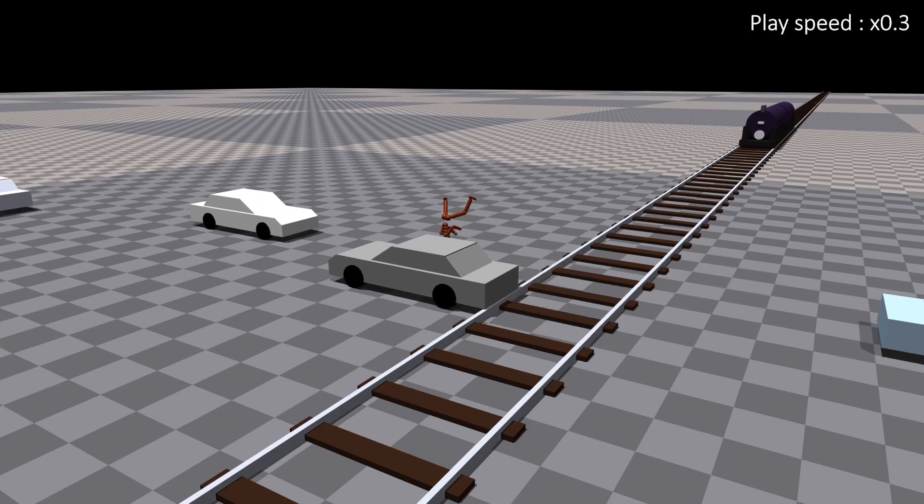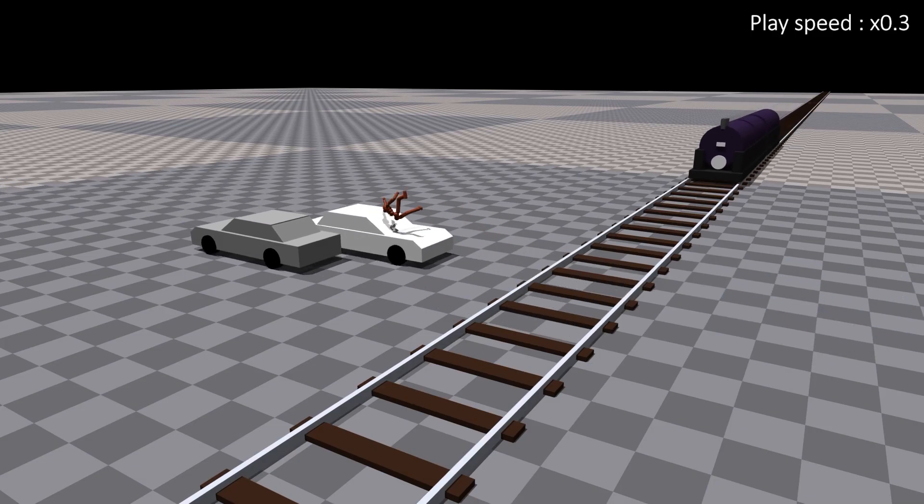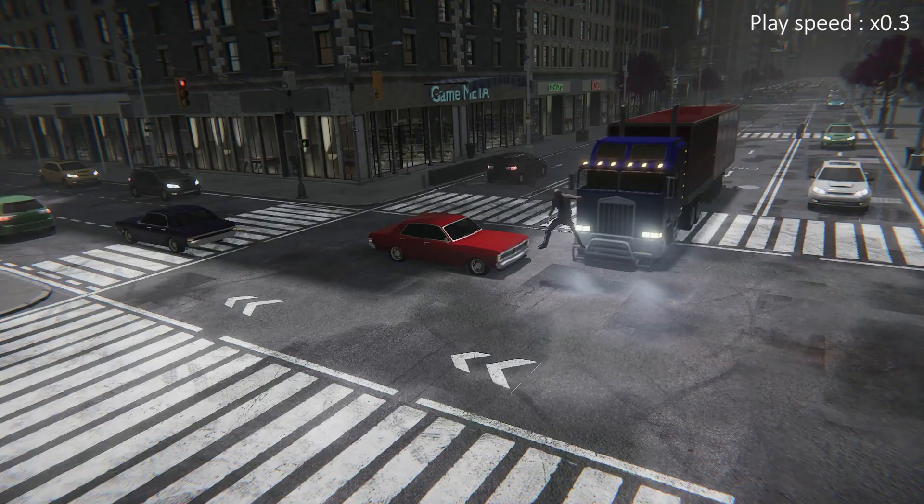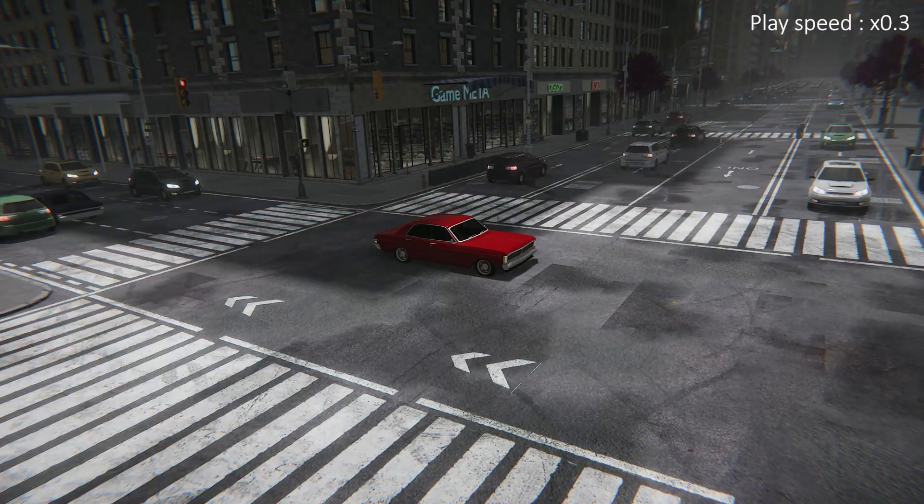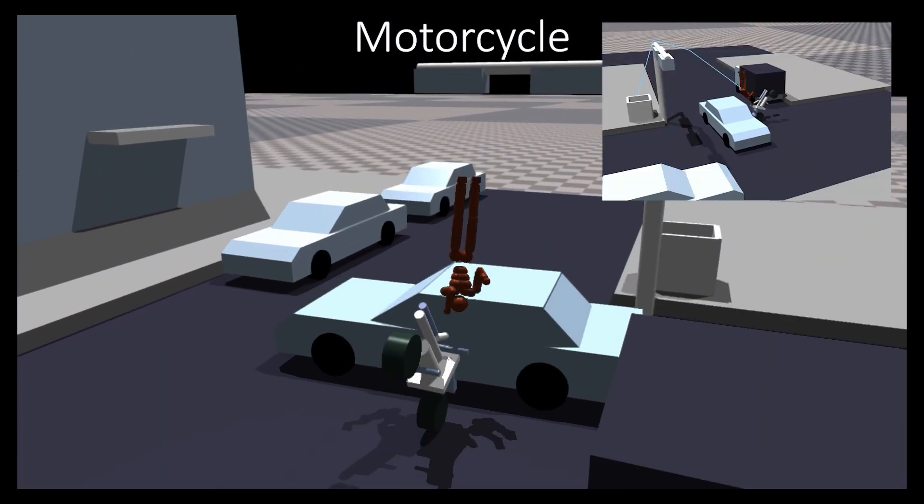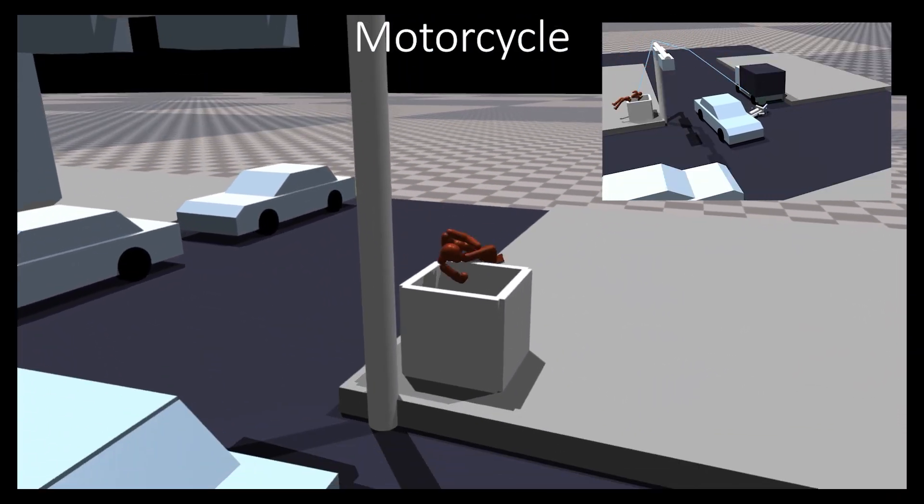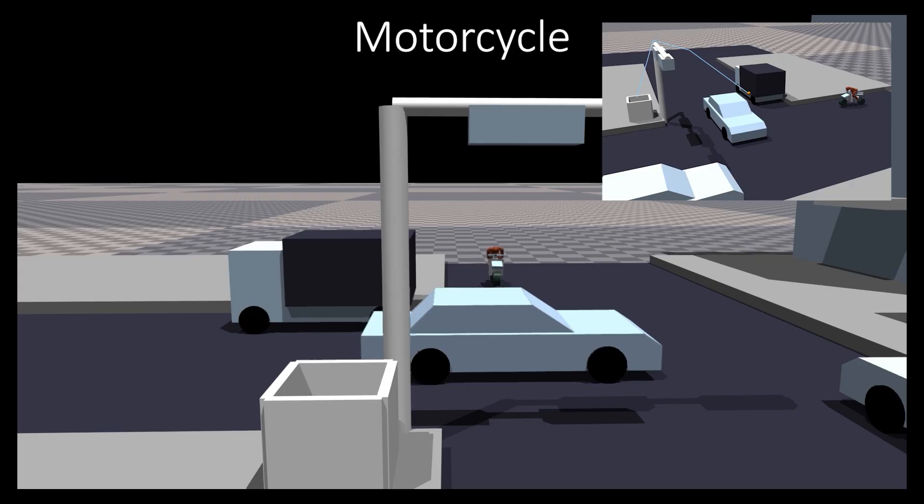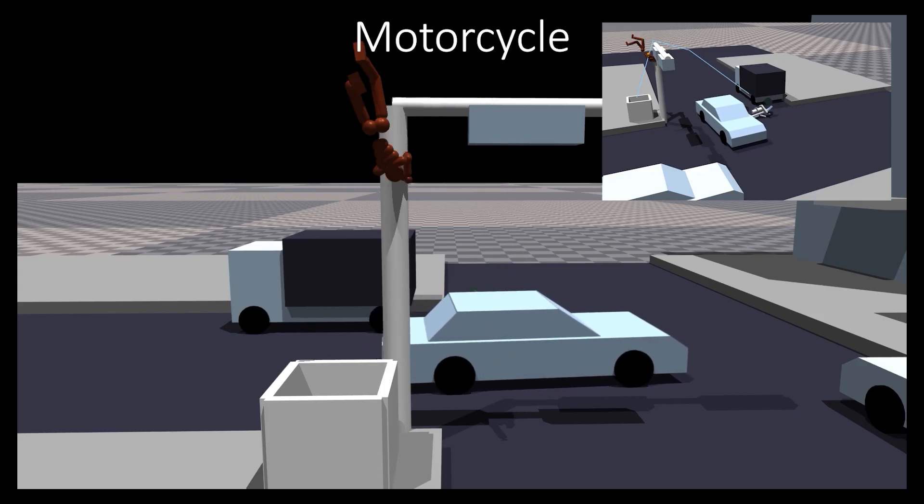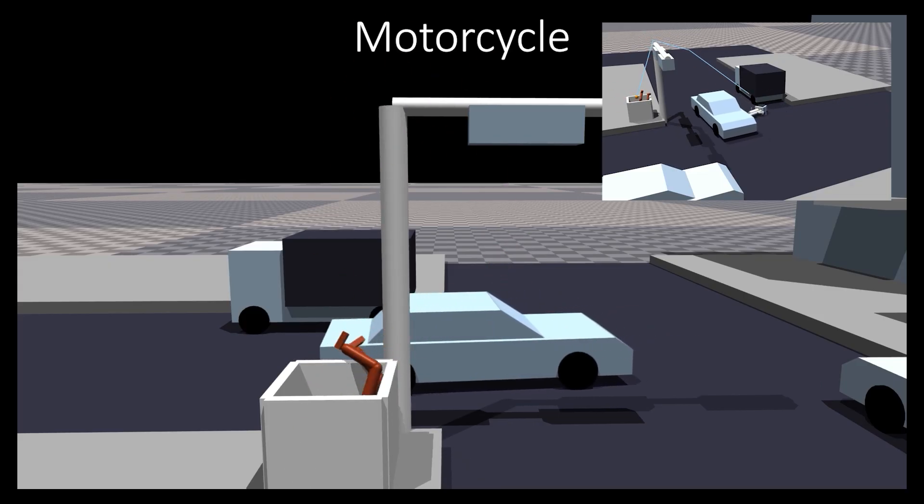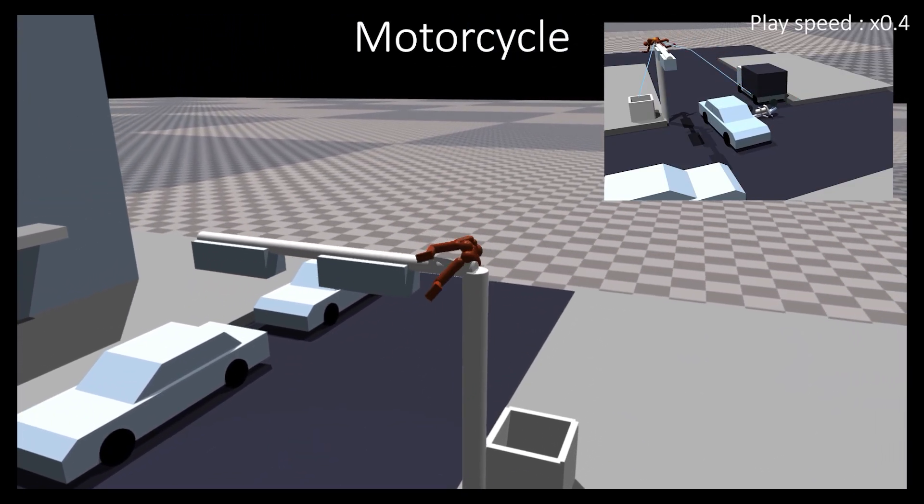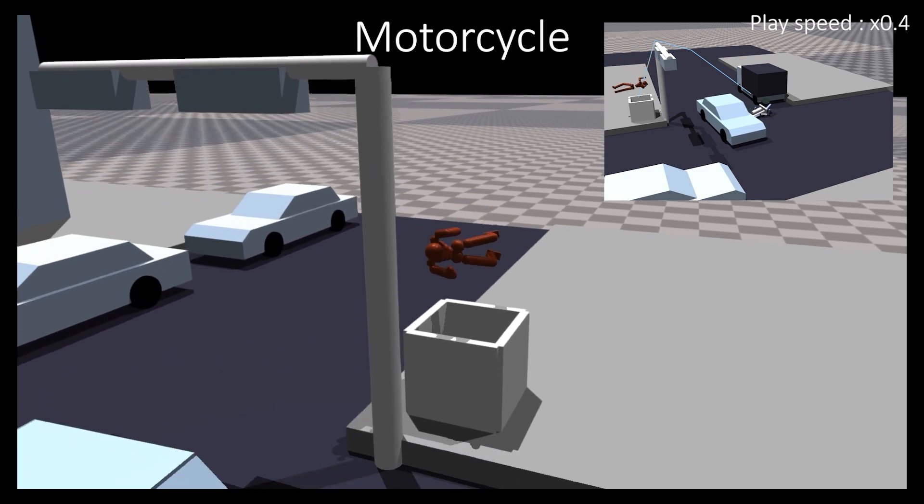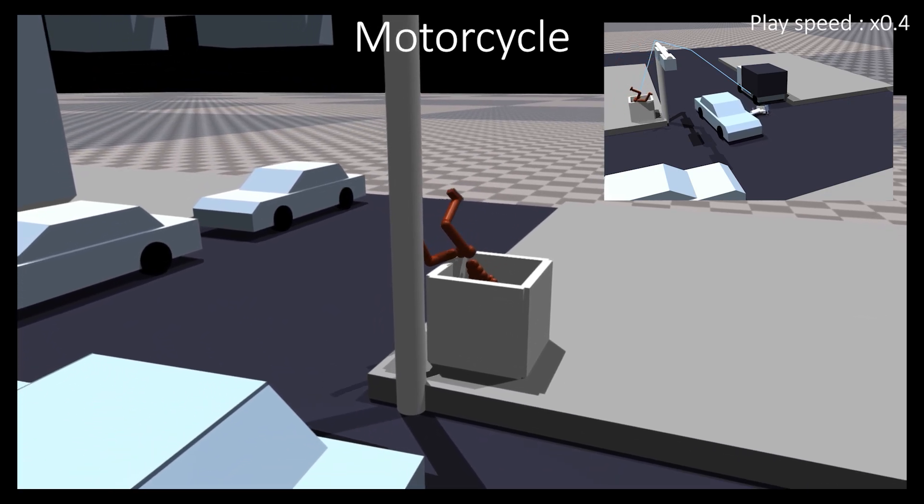In our system, the creator sets up scenes with actors, buildings, cars, and other props, as well as motion trajectory and posture that the stunt actor should follow. Once these elements are defined, our system quickly and automatically generates plausible stunt actions in just a few minutes, while also enabling the creator to edit the scene in an interactive manner. Our system delivers high-quality, flexible, and realistic stunt actions, making it a useful tool for creators.